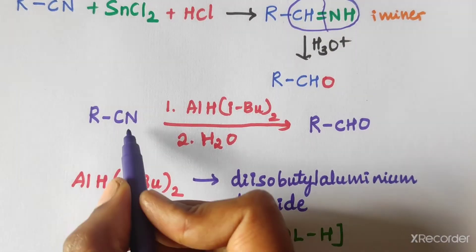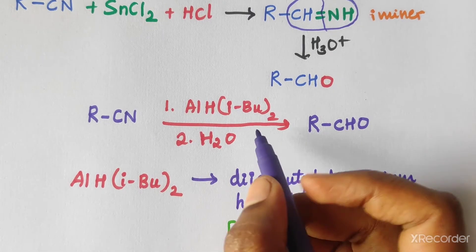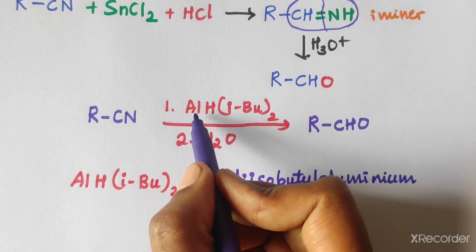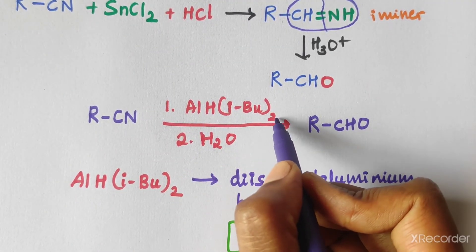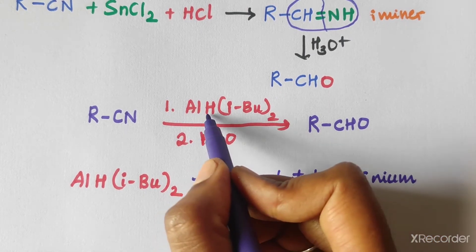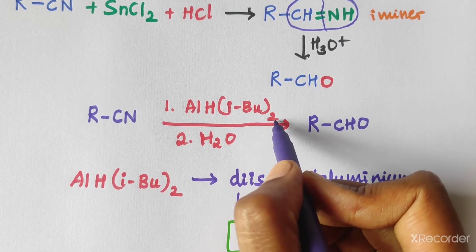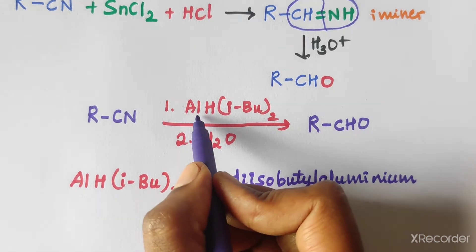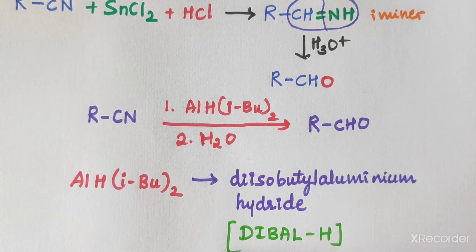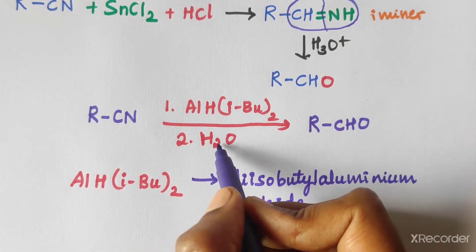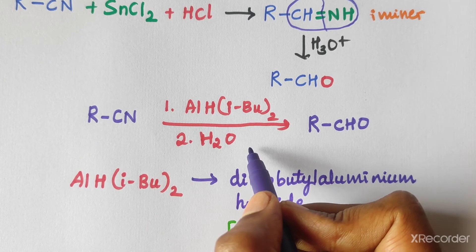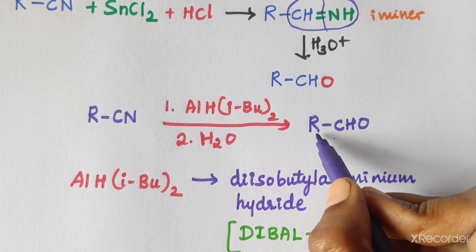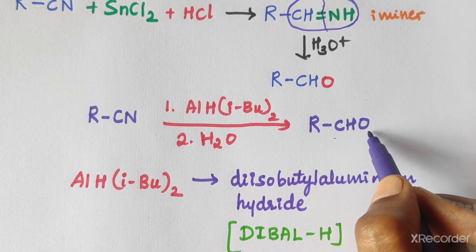The nitrile RCN, treated with SnCl2 and HCl, first gives an imine intermediate (RCH=NH), and then hydrolysis of the imine gives the aldehyde (RCHO). This is the Stephen reaction for preparation of aldehydes from nitriles.